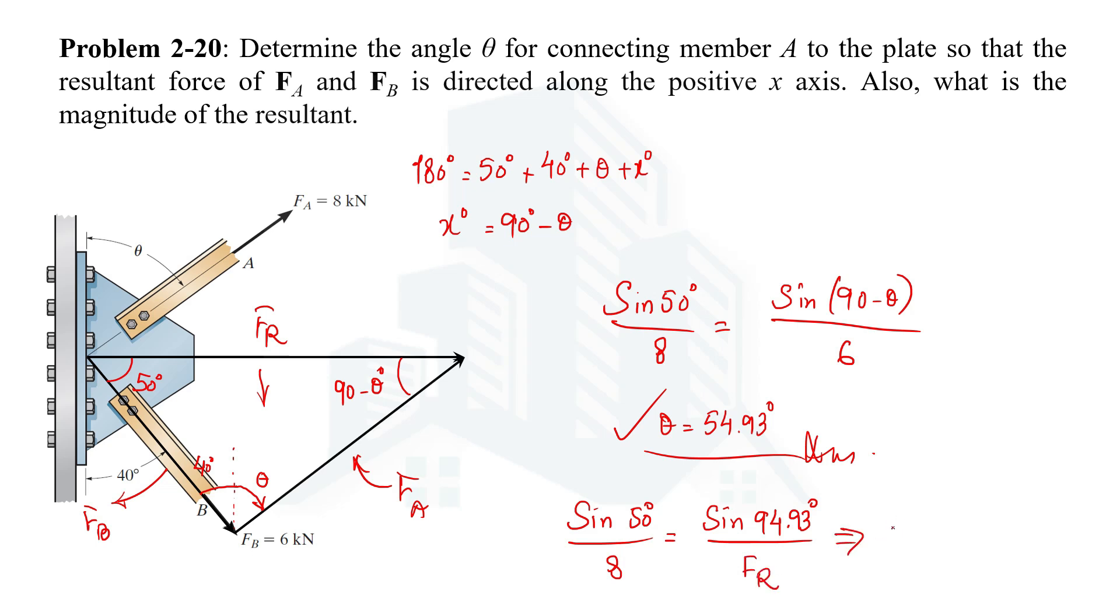In this equation you can see there's only one variable, which is FR, and on doing calculations you are going to get the value of FR as 10.4 kN. And that's the other answer. So now we have calculated theta, which is 54.93, the angle which FA force is making with the positive y-axis, and also we have determined the magnitude of the resultant force, which is 10.4 kN.